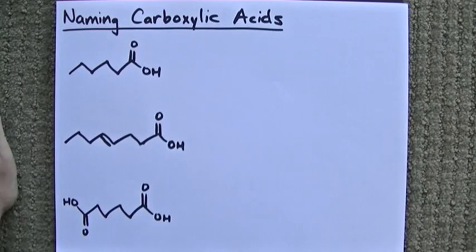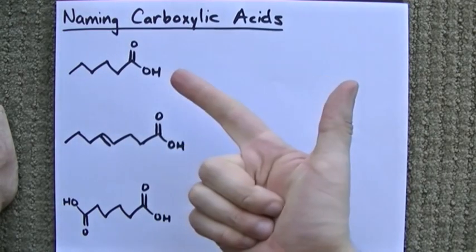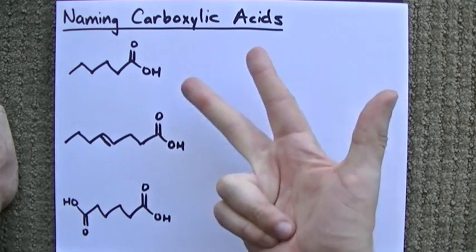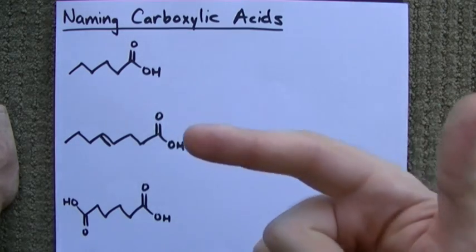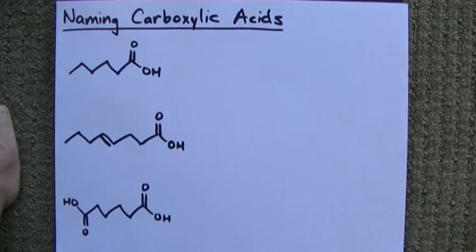Alright, if you've been following this series, you can already name alkenes, alkanes, alkynes, alcohols, aldehydes, and ketones. Next in line, we're going to be doing carboxylic acids.